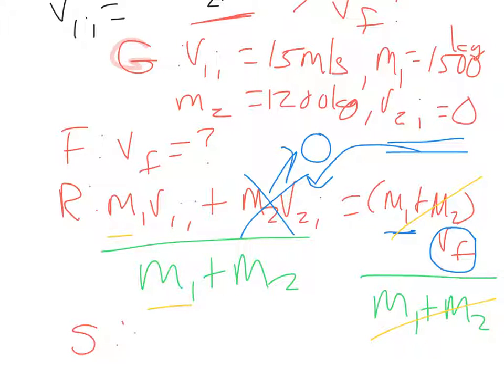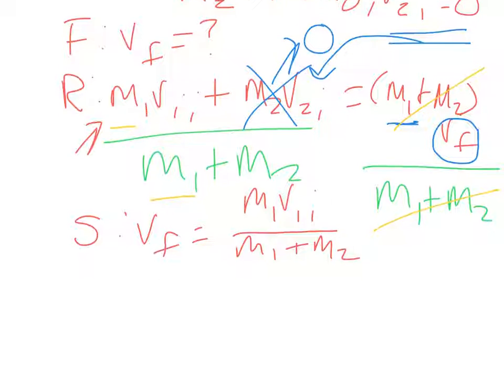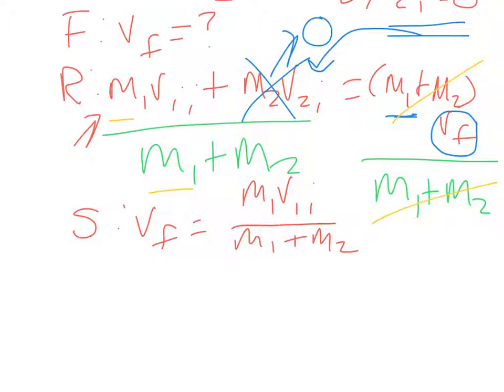So then for my solve step, I see I have VF only left on the one side. And then over here, I've got M1V1I over M1 plus M2. All right, so now I can start plugging in numbers.